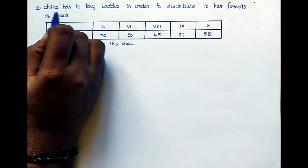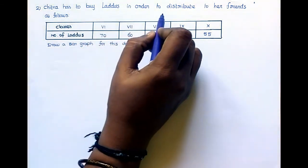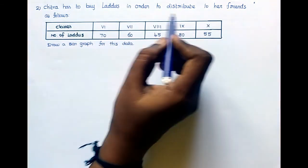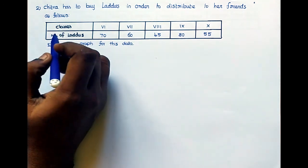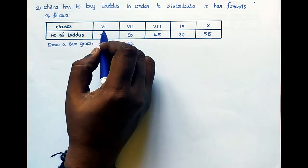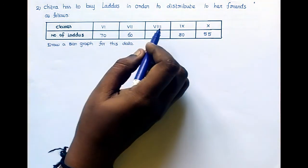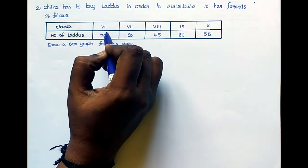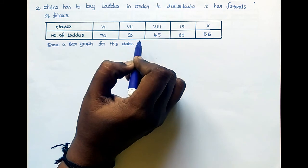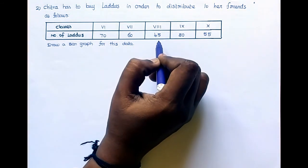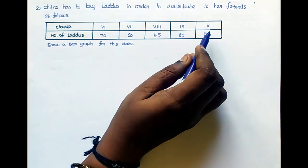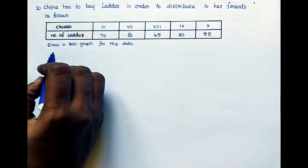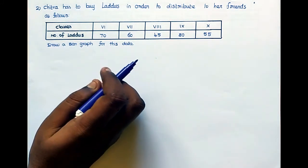Second sum. Chitra has to buy laddus in order to distribute to her friends as follows. Classes 6th, 7th, 8th, 9th, 10th. Number of laddus: 6th 70, 7th 60, 8th 45, 9th 80, 10th 55 students. Draw a bar graph for this data.